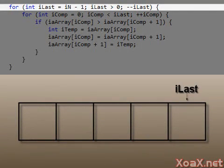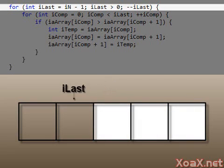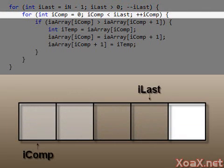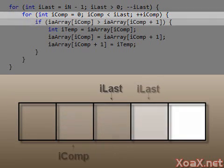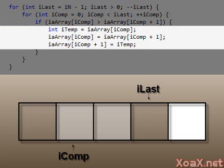The outer for loop is indexed by the last unsorted element. Notice that this loop runs from iN-1 to 0, so that when it is done, the array is sorted. The inner loop runs from the first entry to the entry before the last unsorted element, and this loop sends the next highest element to the position iLast. Inside the loop, we compare the entries at iComp to the one after it and swap them if they are out of order.